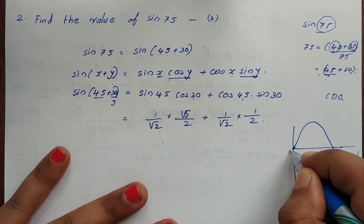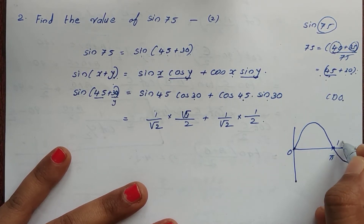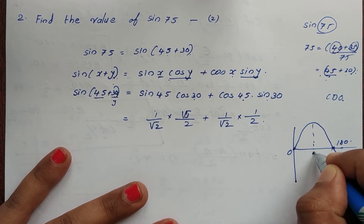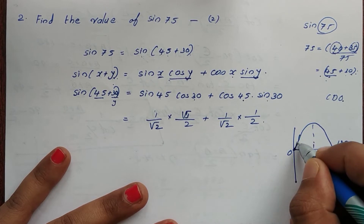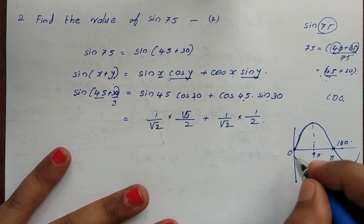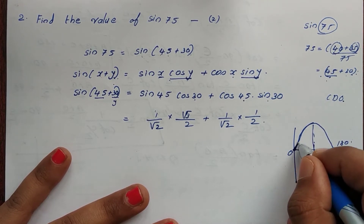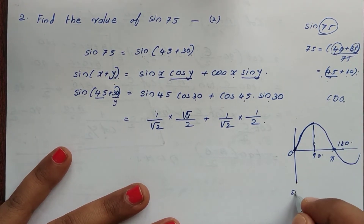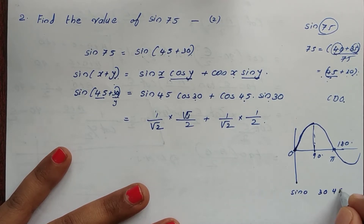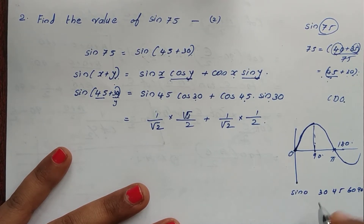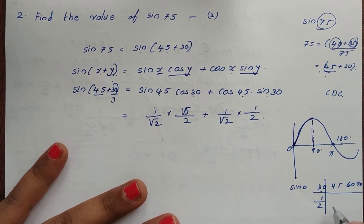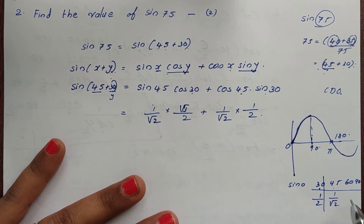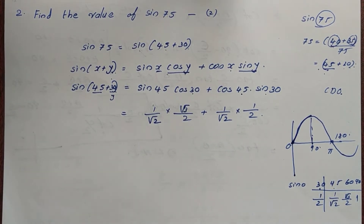For reference: sin values for angles 0, 30, 45, 60, 90 are 0, 1/2, 1/√2, √3/2, and 1 respectively. Sin30 = 1/2, sin45 = 1/√2, sin60 = √3/2, sin90 = 1.